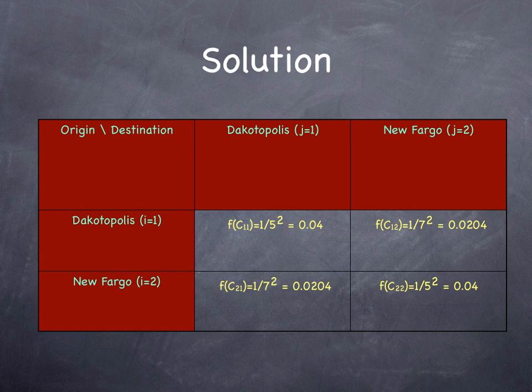while 0.02 over 0.02 plus 0.04 is the probability that you'd be willing to go from Dakotopolis to New Fargo, assuming that the number of trip origins or trip destinations was the same.